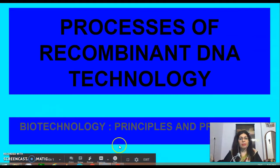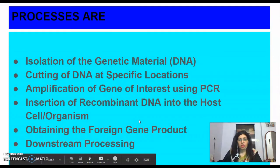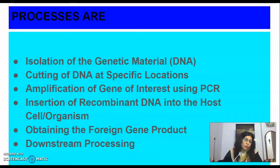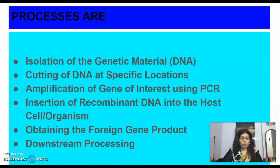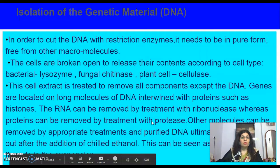We will move on to the process involved in recombination. First of all, we isolate the genetic material and cut DNA at specific locations. We amplify the gene of interest using PCR — polymerase chain reaction — then recombine it along with the vector, and introduce it into the host cell or organism. Finally, we obtain the foreign gene product, then purify it, and the final production goes to the market. That comes under downstream processing. We will do this one by one.